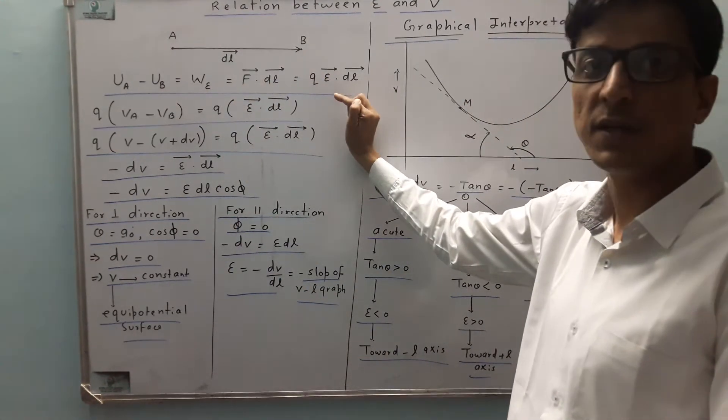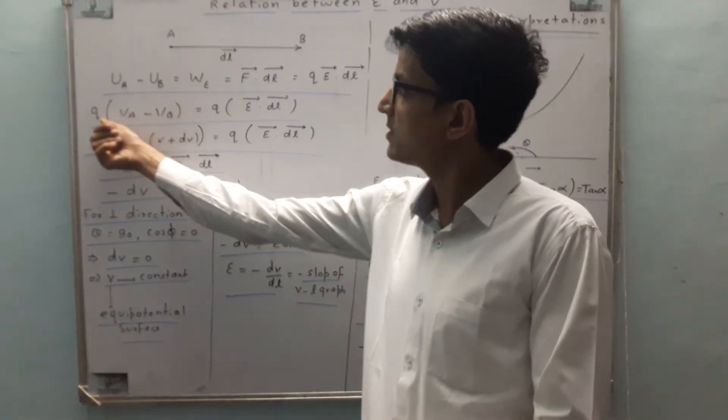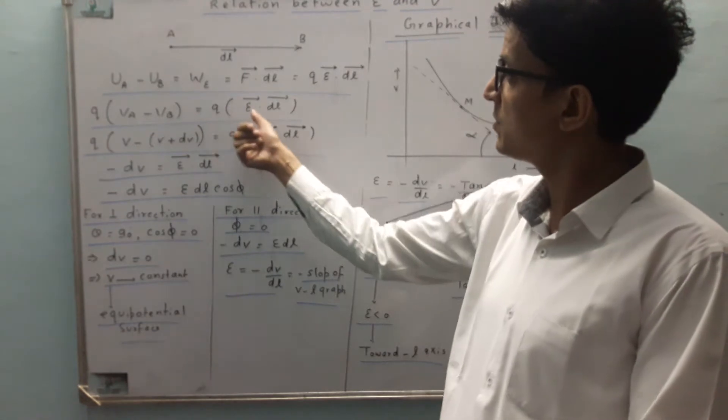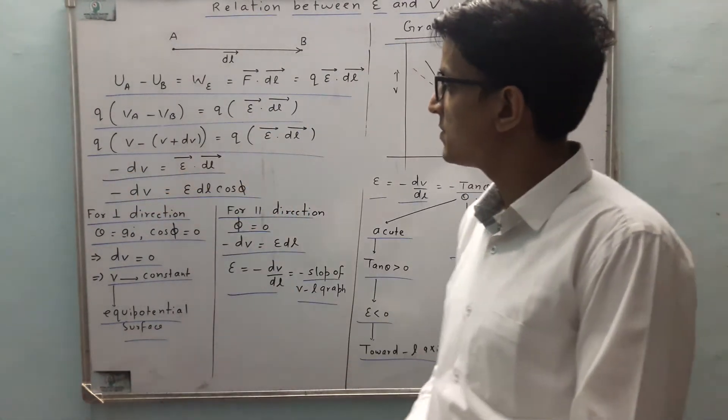The force is Q into E. We have the difference of potential energy as Q into E into DL, which is Q E dot DL. Finally, we have this result: minus dV equals E dot DL.